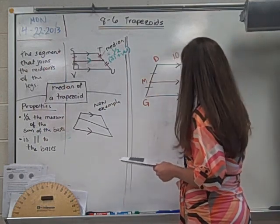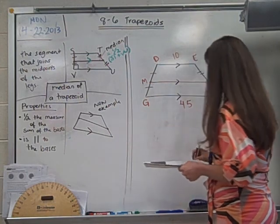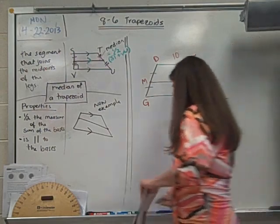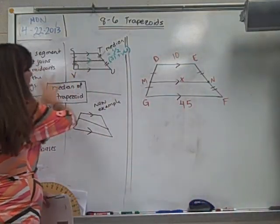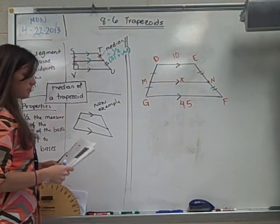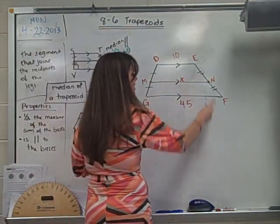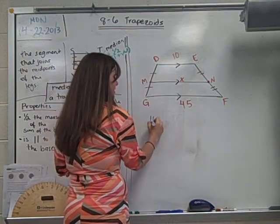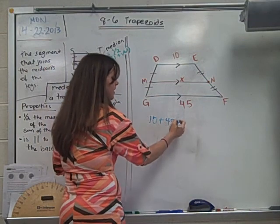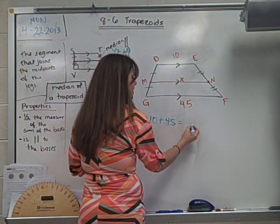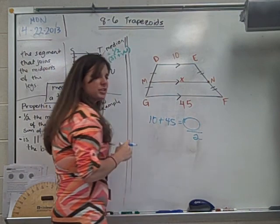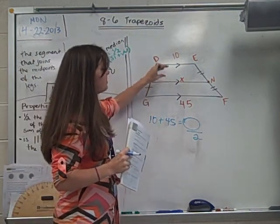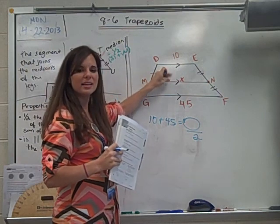So what if I give you this information? What if I tell you that D-E is 10 and G-F is 45? I'm going to ask you, can you find the median based on this property that we know? Your median is always half of the sum of the two bases. So let's add together 10 plus 45 and then after we get that sum, we're going to take that number and divide it by two.